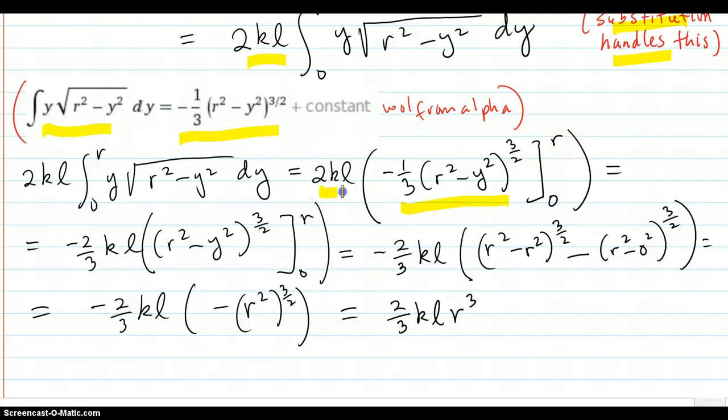Evaluate this definite integral using that anti-derivative right here, from zero to R. Factor out the 2KL. Factor out even the negative one-third. Then start the substitution of the R and the zero in there. Put them in and work out all the algebra. You get this. This is the total mass of the sawdust: two-thirds KL R cubed.